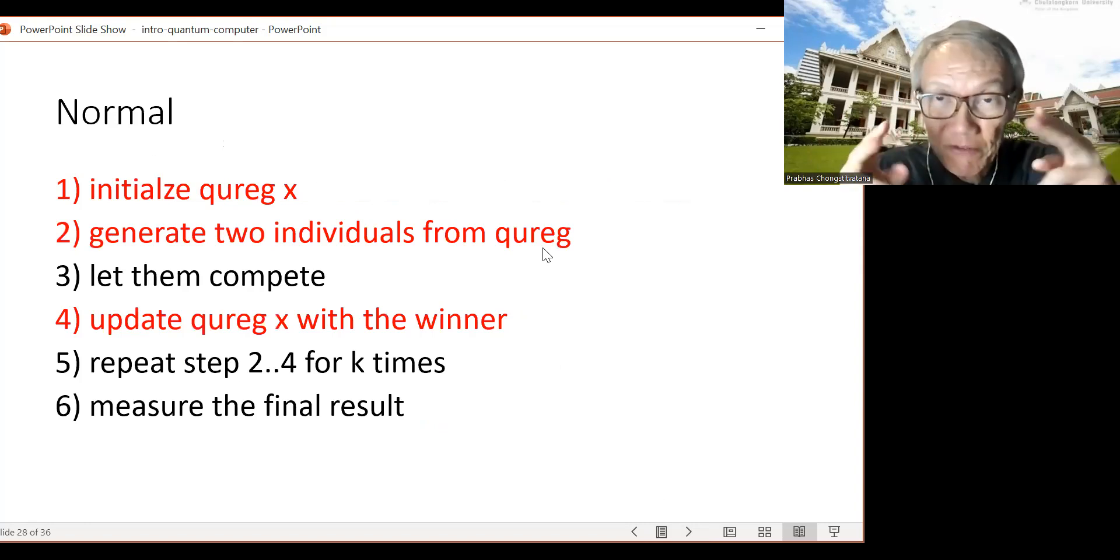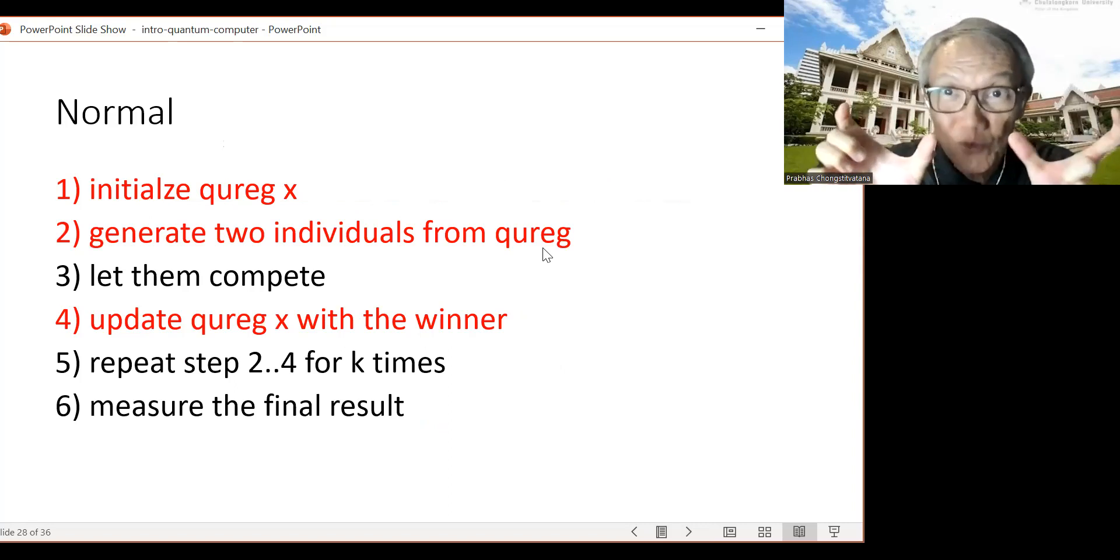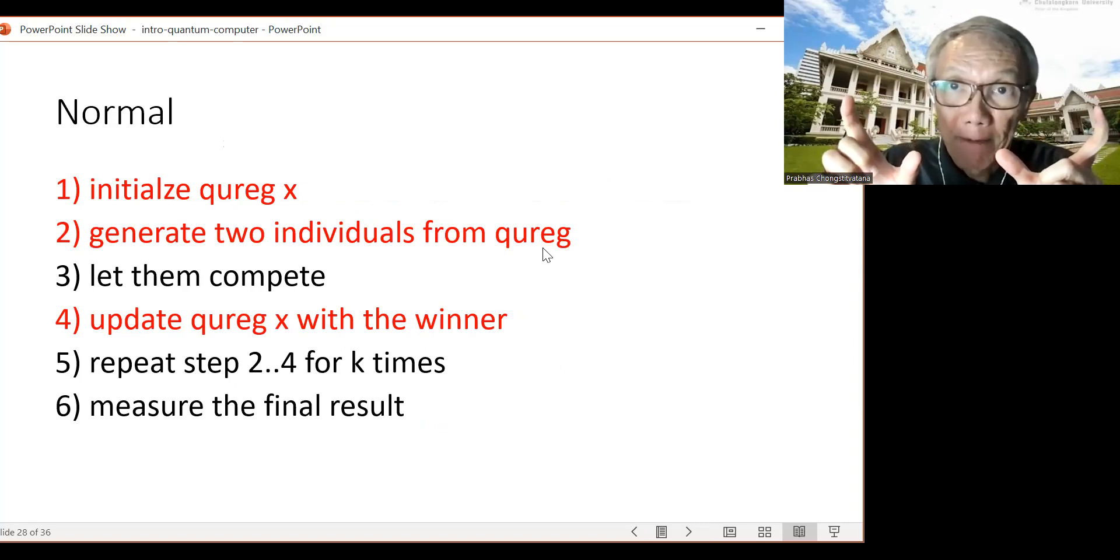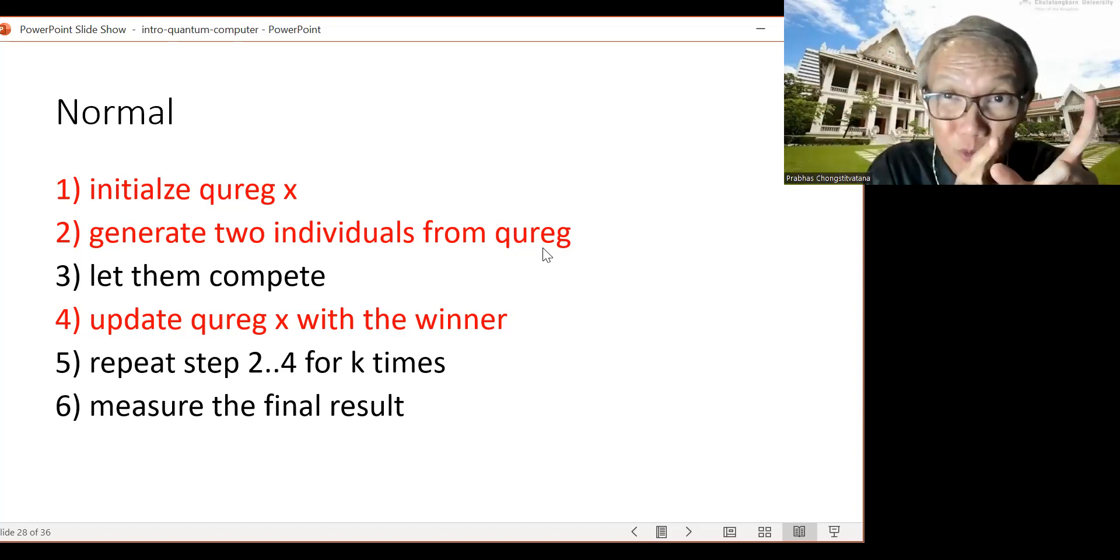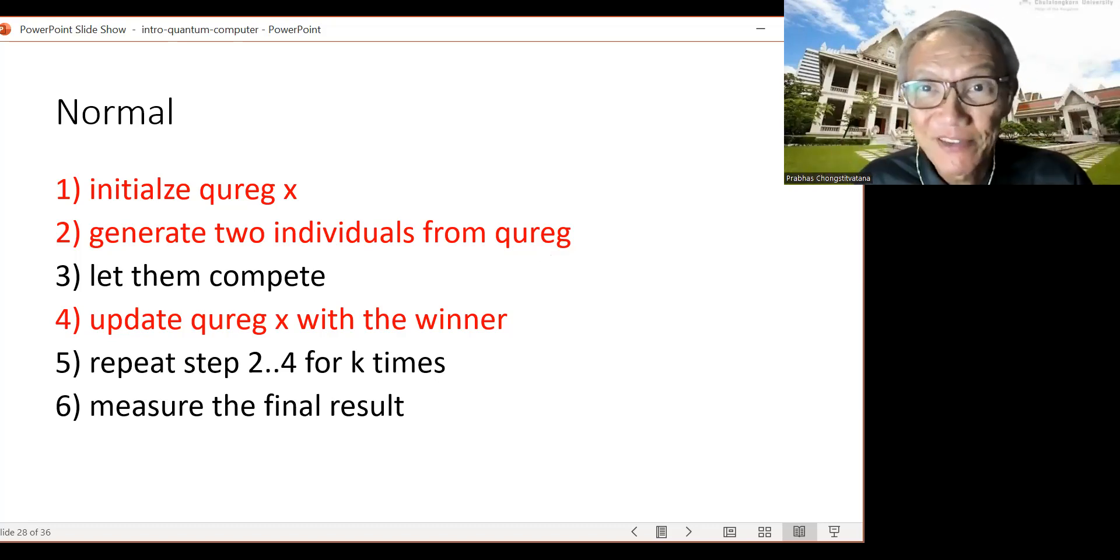For optimization, we randomly generate two vectors or two solutions. And then we measure the goodness of that. And then we try to update, to generate another candidate based on being nearer to the winner of these two. So when we're talking about quantum, it's just using quantum computers to run this kind of optimization based on a classical idea of genetic algorithms. A special version called compact genetic algorithm.